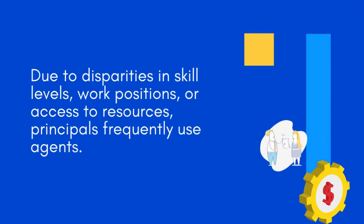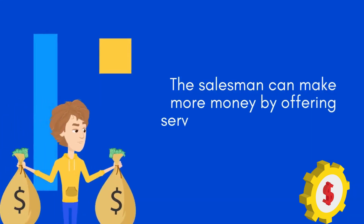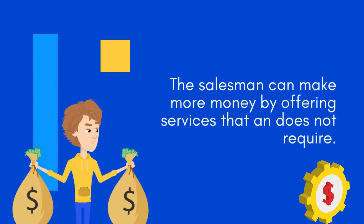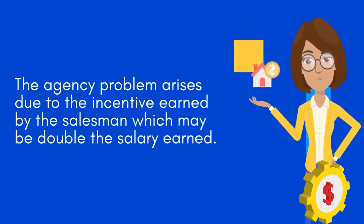Due to disparities in skill levels, work positions, or access to resources, principals frequently use agents. For example, the salesman can make more money by offering services that a client does not require. The agency problem arises due to the incentive earned by the salesman, which may be double the salary earned.